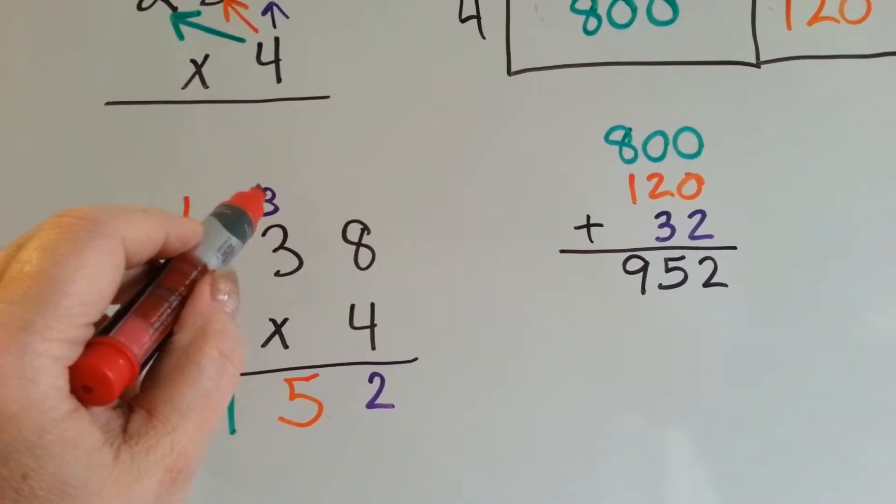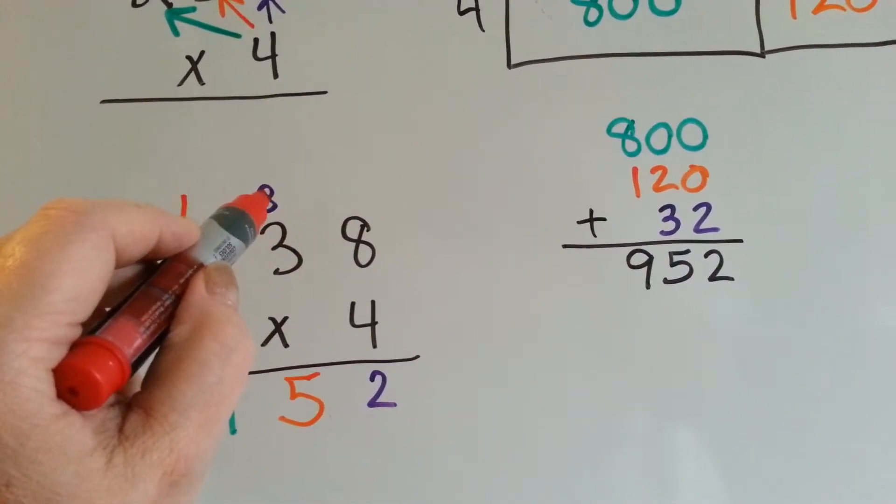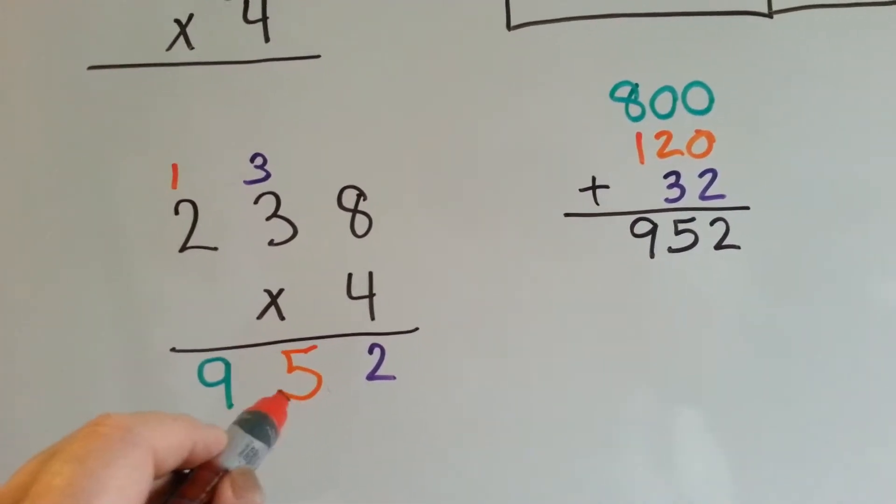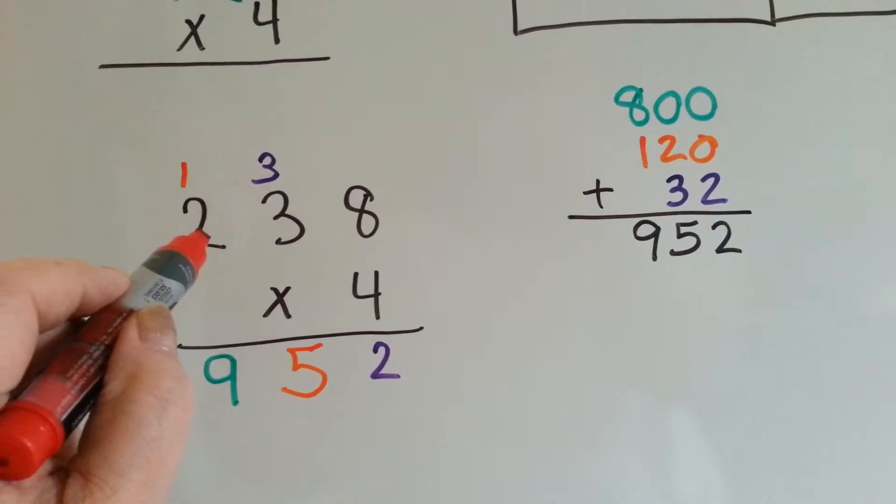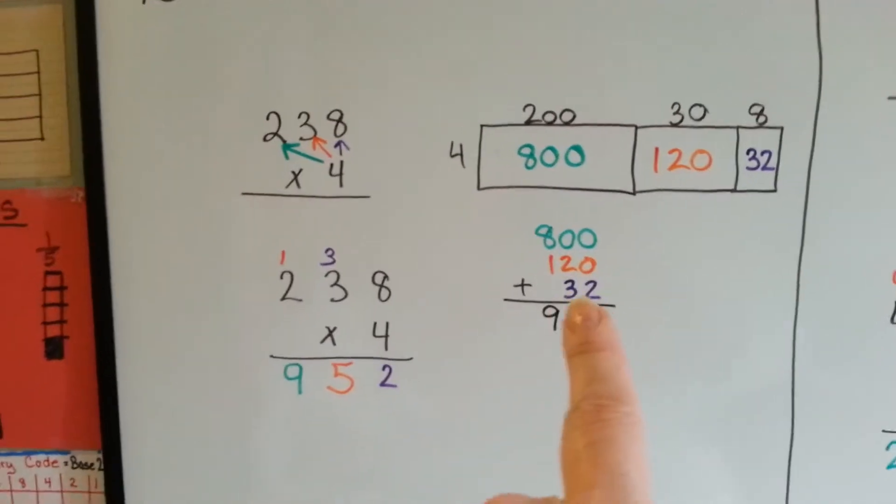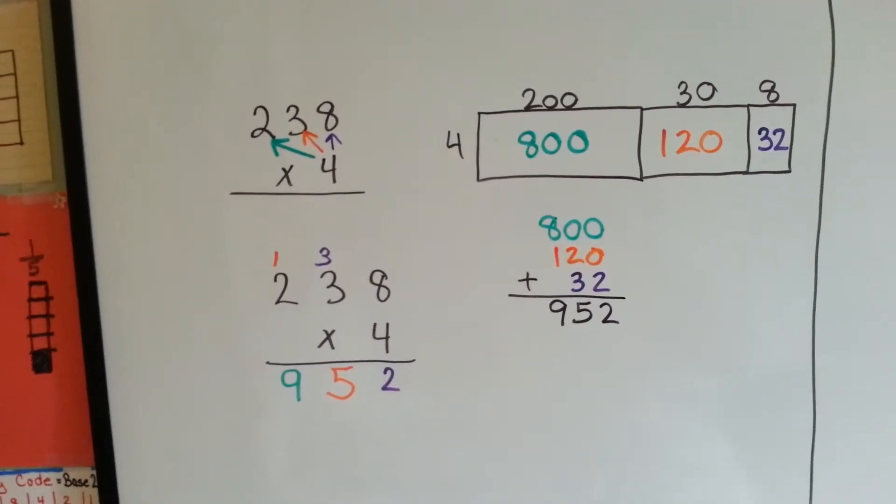So we've got 12, 13, 14, 15. We carry the 1 from the 15 and put the 5 down here in this column. Then we do 4 times 2, which is 8, plus 1 is 9, and we put the 9 there. And it's the same thing as doing it this way. See? You get the same answer.